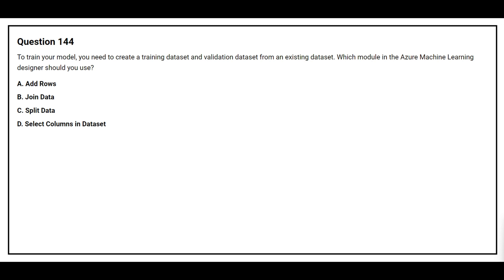Question number 144. To train your model you need to create a training dataset and validation dataset from an existing dataset. Which module in the Azure Machine Learning Designer should they use? Option A: Add rows. Option B: Join data. Option C: Split data. Option D: Select columns in dataset. The correct answer is Option C, Split data.